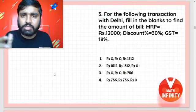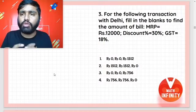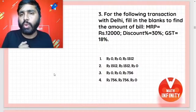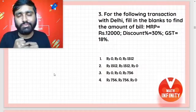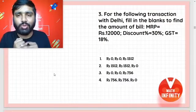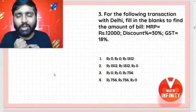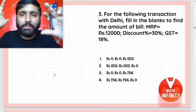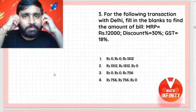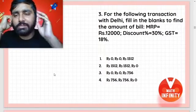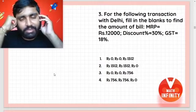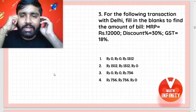Let's directly go to the next question. For the following transaction within Delhi, fill in the blanks for the amount of the bill. MRP is ₹12,000, discount is 30%, and GST is 18%.